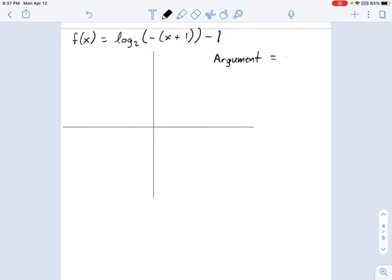So argument equals zero. Well, what's the argument? That is this thing, this negative x plus one inside the logarithm parentheses. So where does that equal zero? Well, that's going to be where, okay, we divide each side by a negative sign. We just get x plus one equals zero. And that's where x equals negative one.